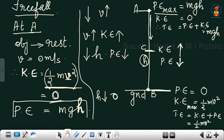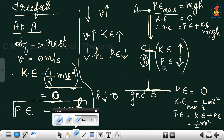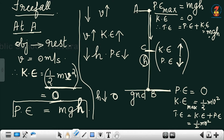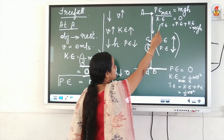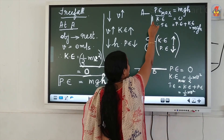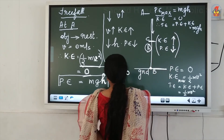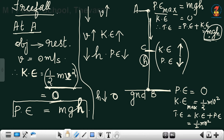From this example it is clear that sometimes the total energy is completely potential, sometimes it is completely kinetic, and sometimes it is partially kinetic and partially potential. When the object is at height h, it has maximum potential energy of mgh, and since it is at rest, its kinetic energy is 0, so total energy equals mgh, which is completely potential.